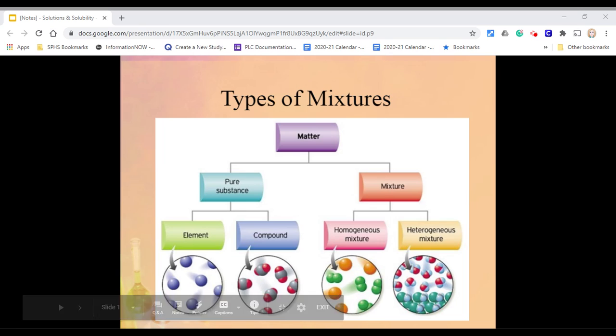We need to talk about types of mixtures, and to do that we need to back up just a second and talk about how matter is classified. If you look at this graphic here, you can see that matter, anything that has mass or takes up space, can be broken into two different types: pure substance and a mixture. Pure substance is what we've been talking about where it breaks into elements and compounds. Now we're going to talk about mixtures, and in mixtures we have both homogeneous and heterogeneous mixtures.